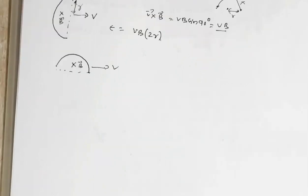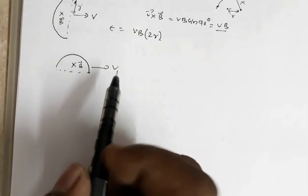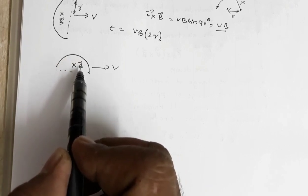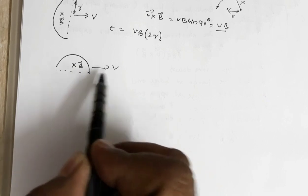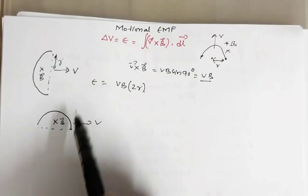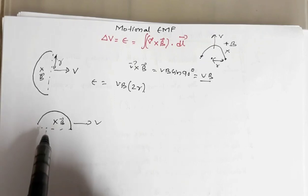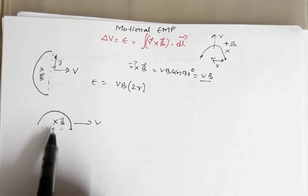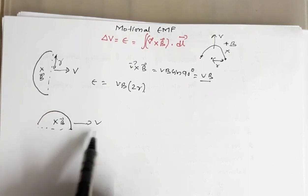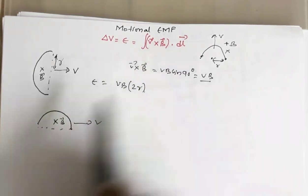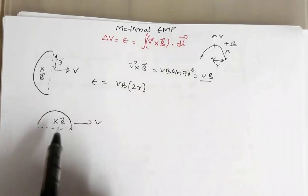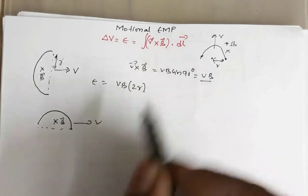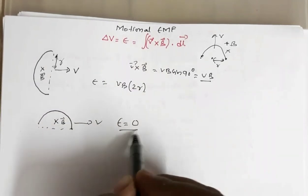Second part of the problem. In this case, you have a semi-circular wire; the magnetic field is perpendicular to the plane of the wire and it is moving in this direction V. Now if you find V cross B here — V is in this direction, B is perpendicular to the plane of the paper — so V cross B will be in the upward direction. The length is in this direction. So V cross B dot the length element — the angle between V cross B and the length element is 90°. So this dot product will be 0 and the EMF would be 0.